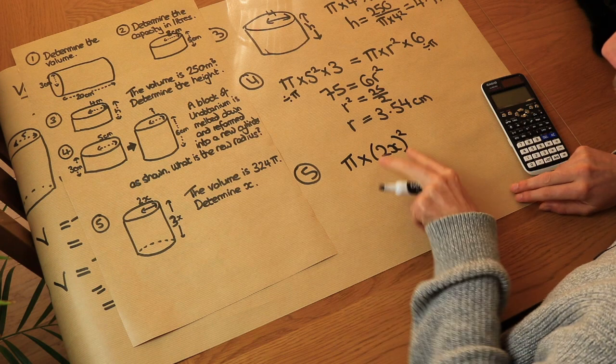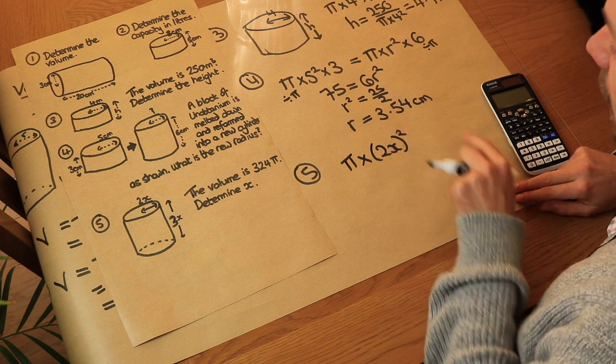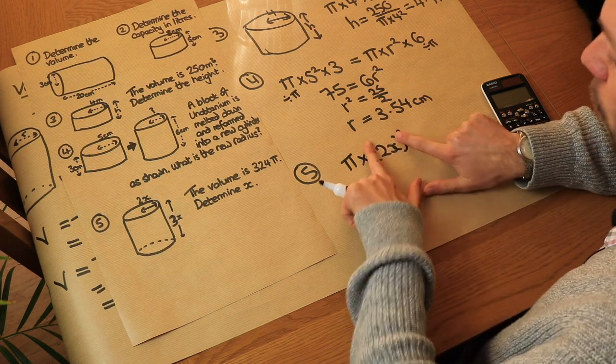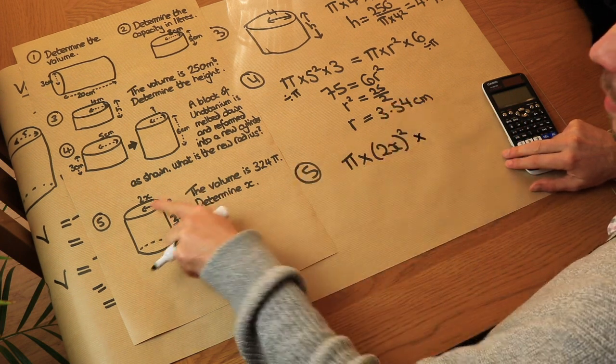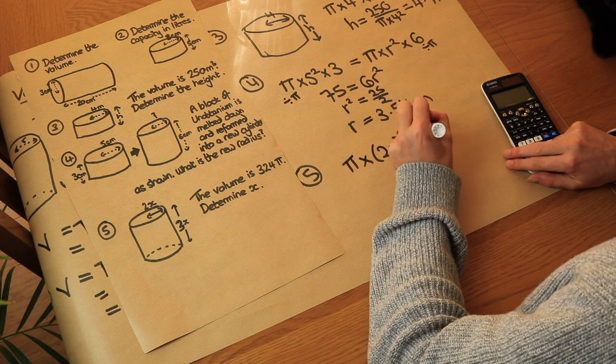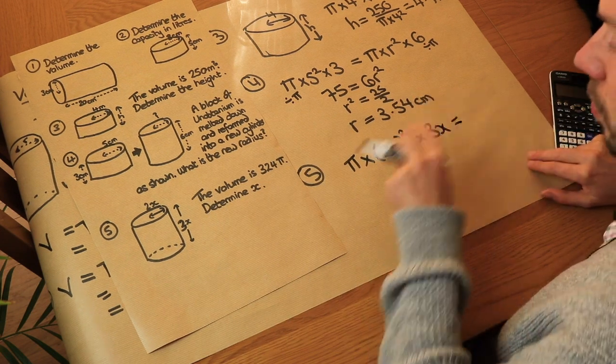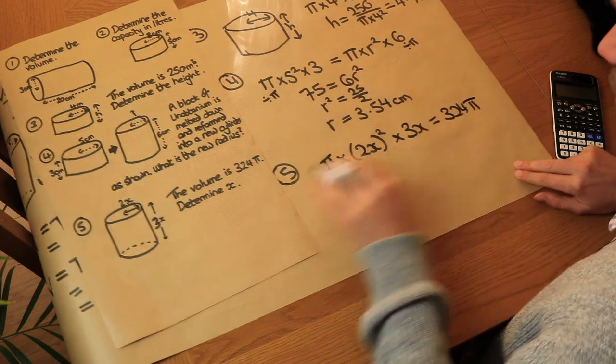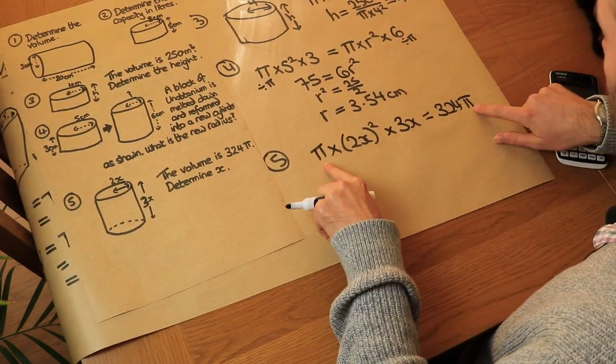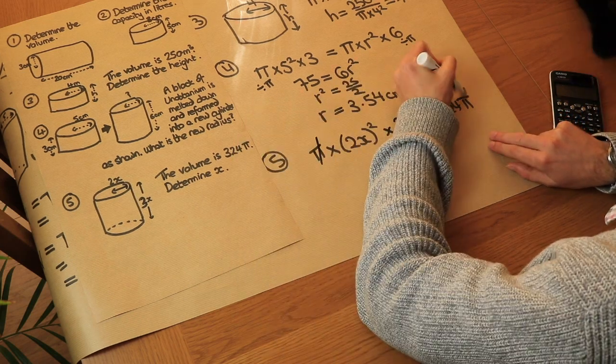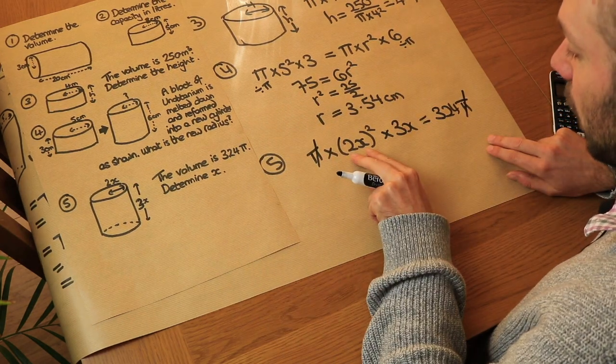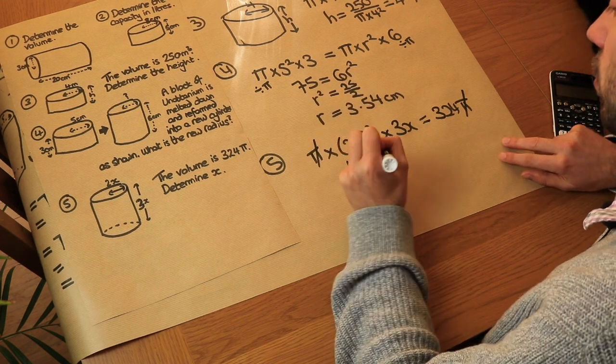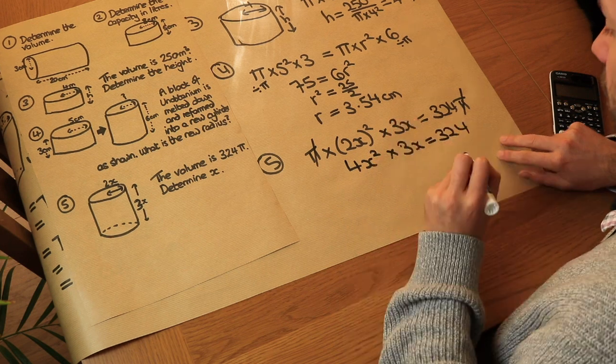The volume of this is going to be pi times by the radius squared, so 2x squared. And notice I'm using brackets here because I want all of 2x squared. If I didn't have the brackets it would only be the x that's being squared, but we want all of 2x squared. So it's pi times the radius squared times by the height of 3x, and we're told that volume is 324 pi. Now let's just try and simplify things a bit. Well we can first divide both sides by pi, so I'm just going to cross out those pis. And then 2x all squared, 2x times 2x is 4x squared, not 2x squared.